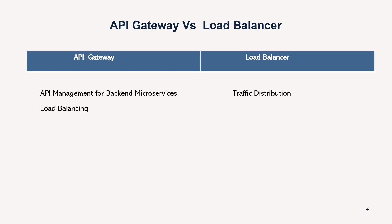API gateway also provides load balancing. Suppose you have a cluster of microservices and it needs to route a request to a particular microservice — it will also load balance. For example, if one microservice has five instances, it will load balance the request between those instances. However, the main purpose of a load balancer is to distribute traffic coming from the client side, not from within the API or internal functionality perspective.